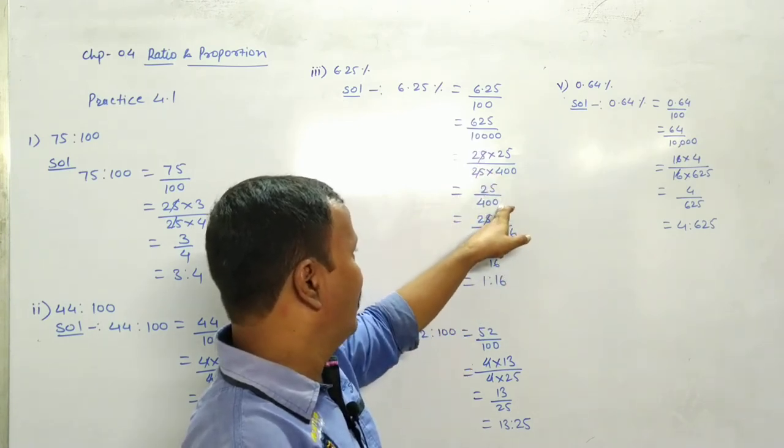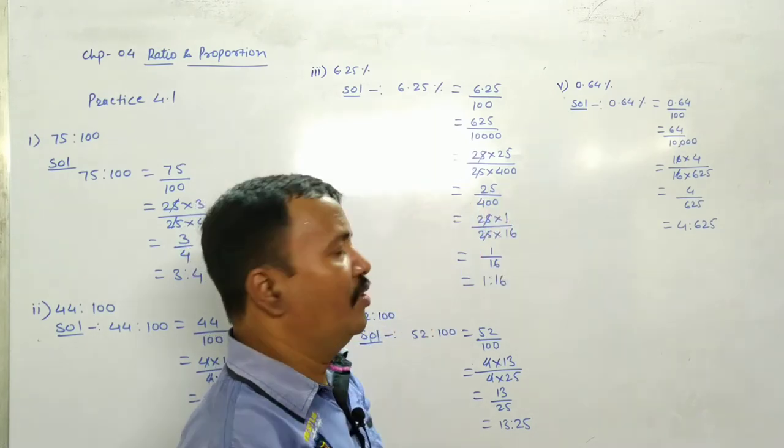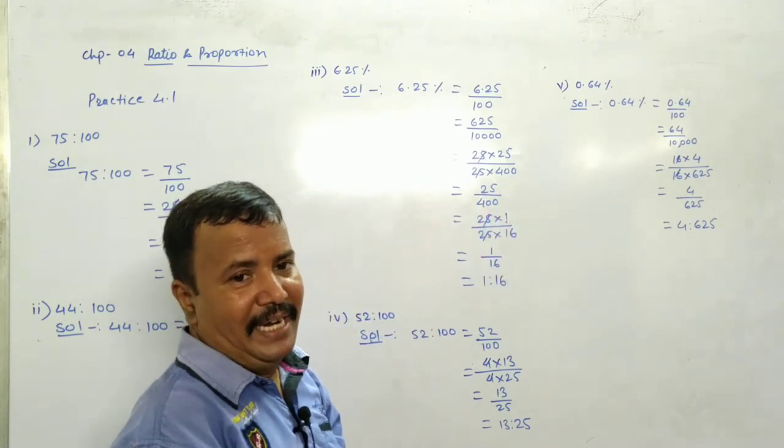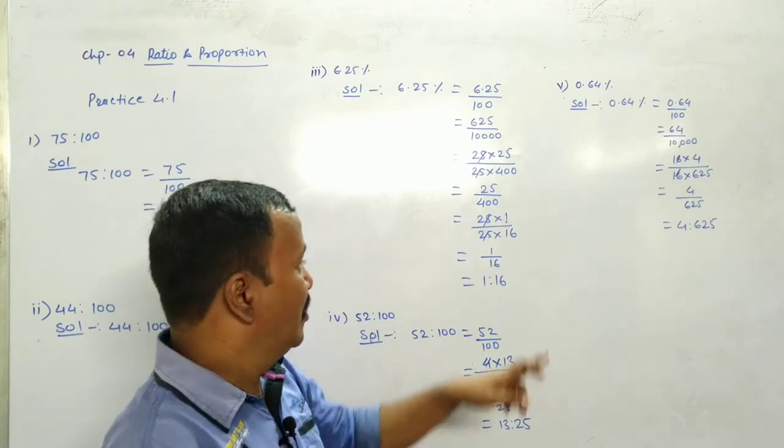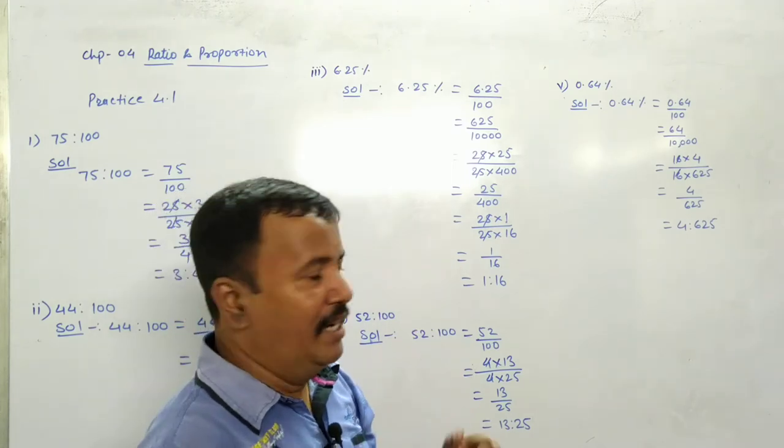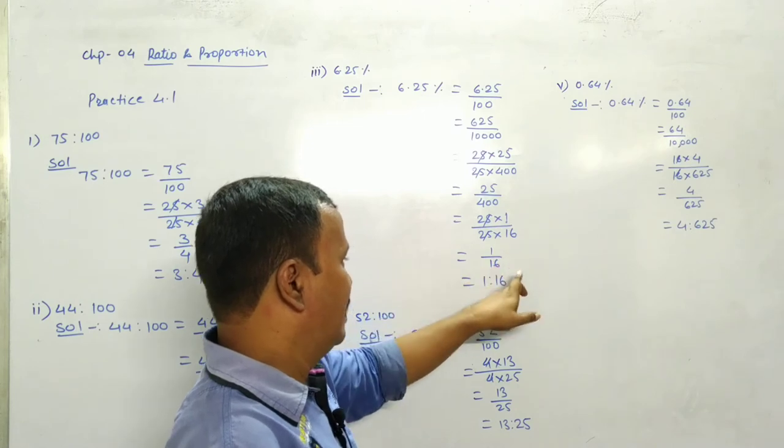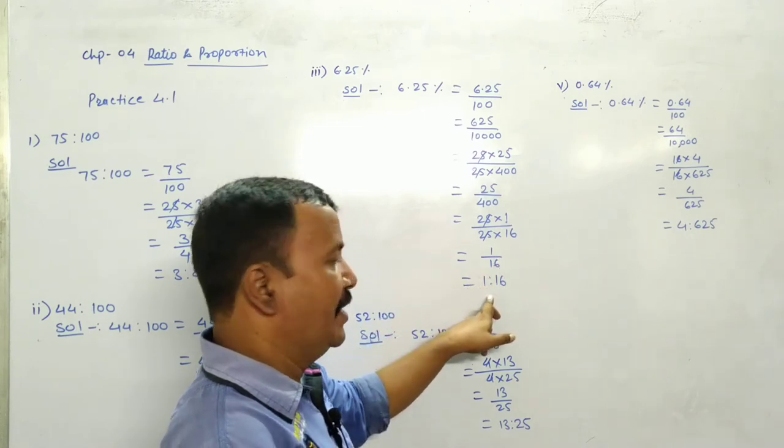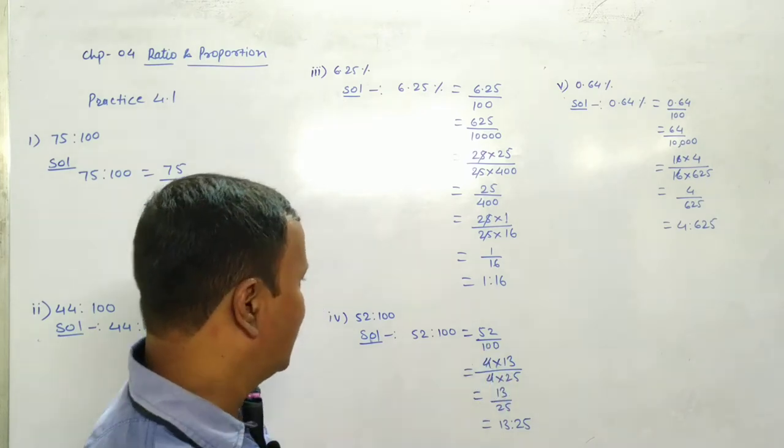25 into 25, when divided gives 400. So 25 into 25, 25 into 400. 25, 25 cancel. Again 25 divided by 16. 25 into 1, 25 into 16. Answer is 1 upon 16. And ratio is 1 ratio 16.